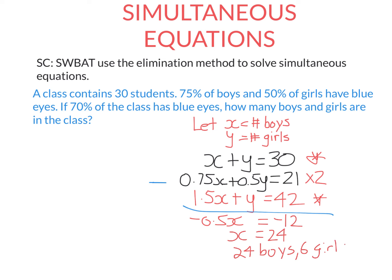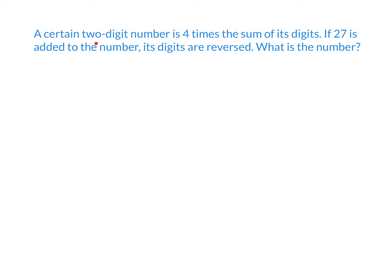Let's look at a slightly harder example. A certain two-digit number is four times the sum of its digits. If I add 27 to the number, the digits are reversed. What is the number?